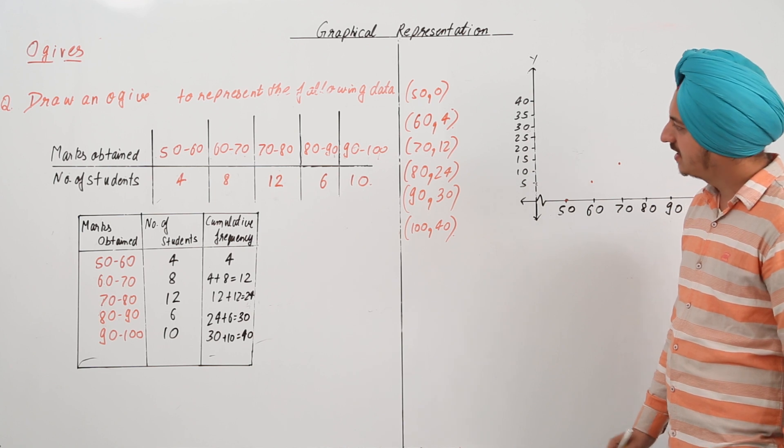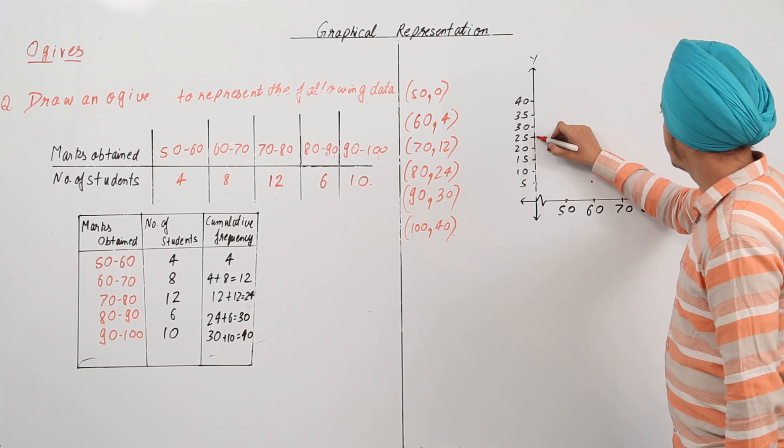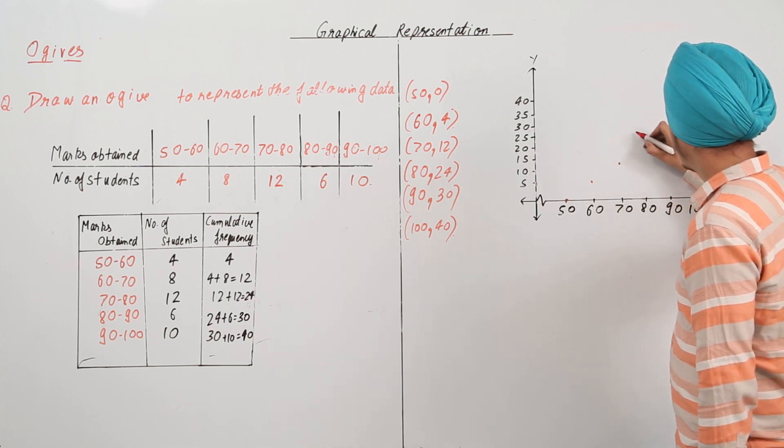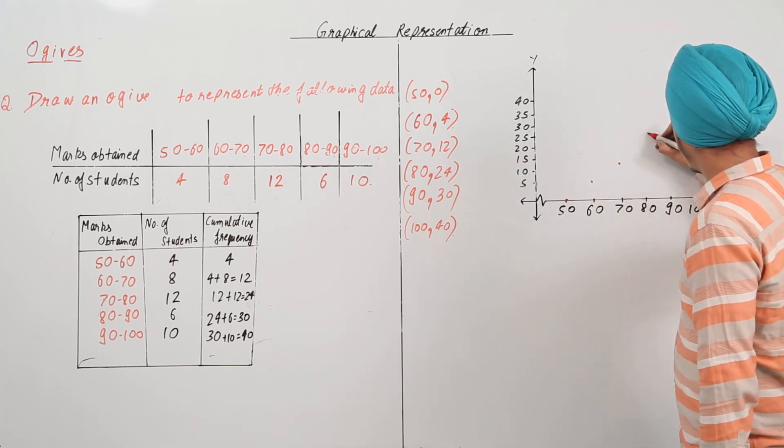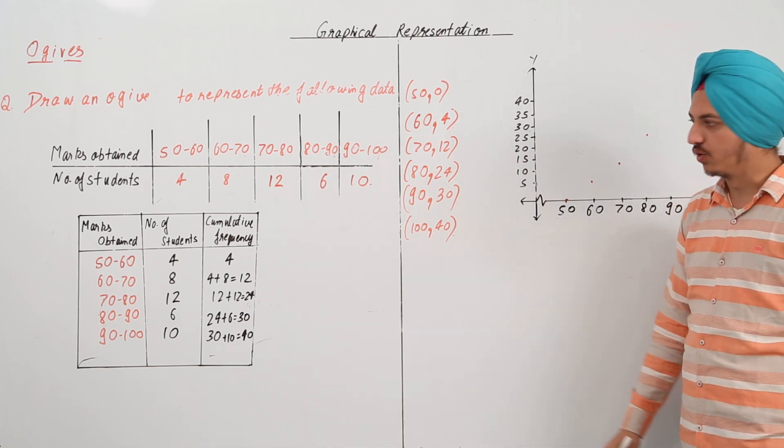Next, what do we have is 80, 24. So, 80 and 24 will be somewhere around 25. So, this is 80, 25 and this is 80, 24.